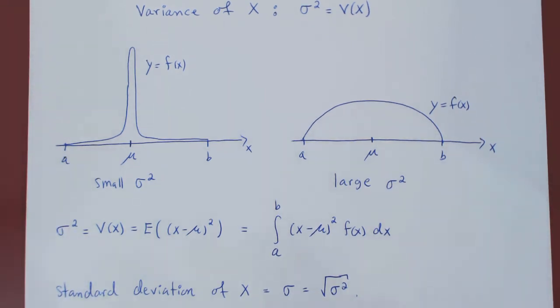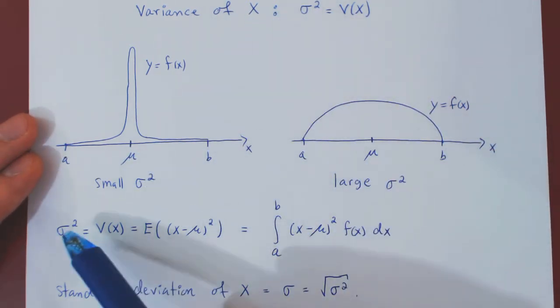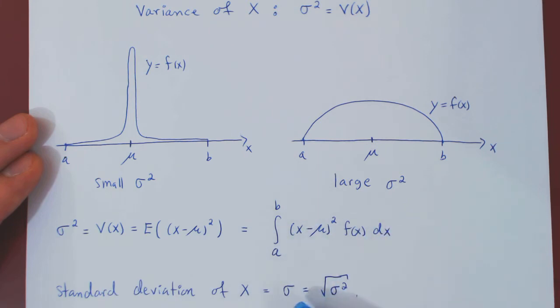And that's it. So, the two key measures of a random variable are its mean, its average value, and its variance, with, of course, the corresponding standard deviation.